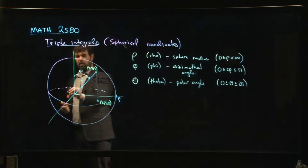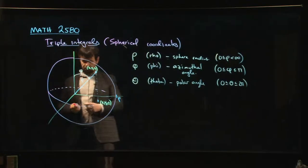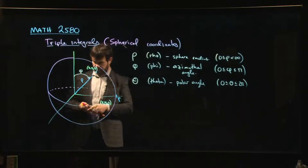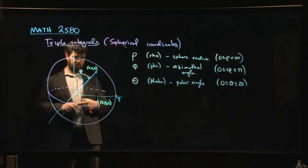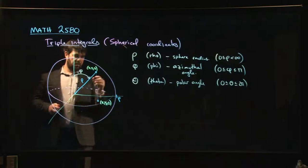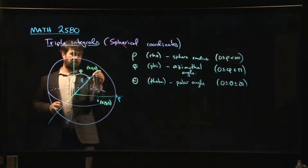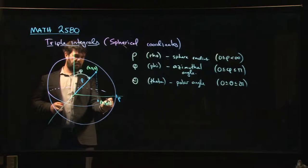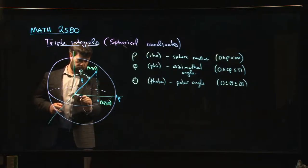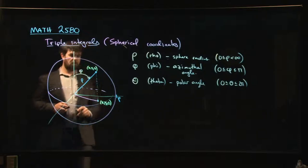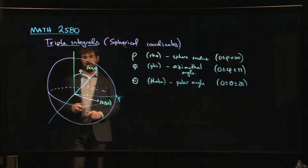And theta is essentially your longitude. It's telling you where, kind of as you work your way around the equator, where you should be. So one way to think about how that theta is measured is you can, if you take this point here, so this is the point on the sphere, and you look at its shadow down on the xy plane, so set the z-coordinate to zero,